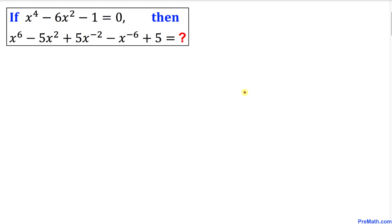Welcome to pre-math. In this video tutorial we have got this interesting if-and-then statement. Here's our problem: if x⁴ - 6x² - 1 = 0, then find the value of x⁶ - 5x² + 5x⁻² - x⁻⁶ + 5. So let's go ahead and get started with the solution.